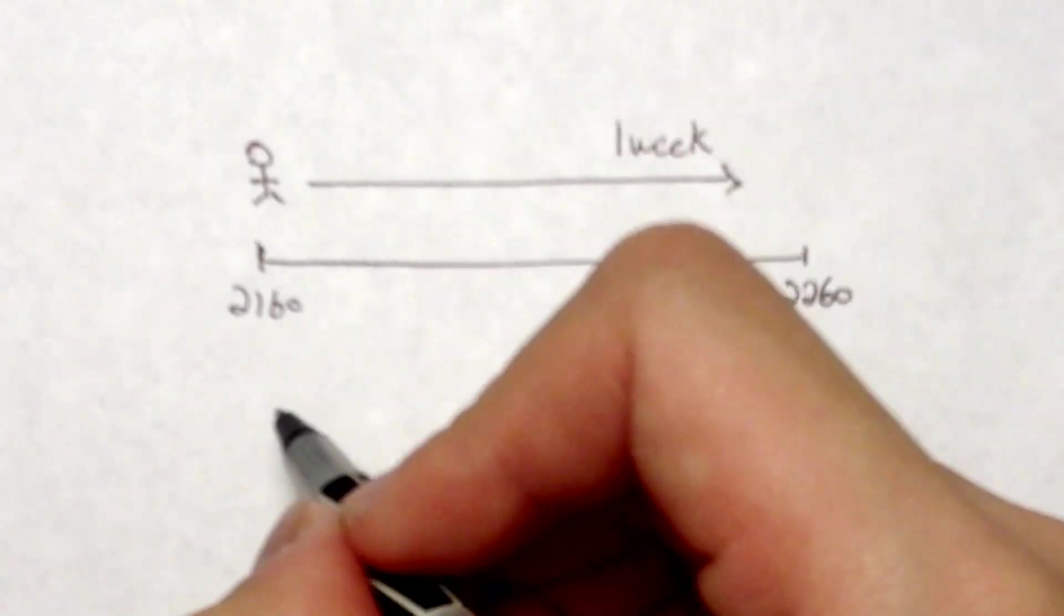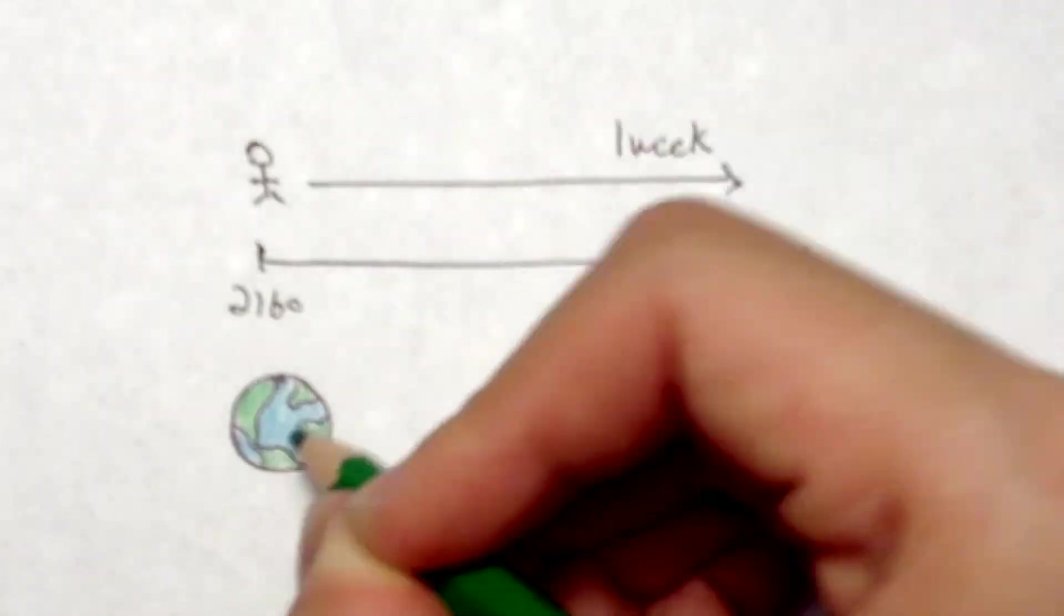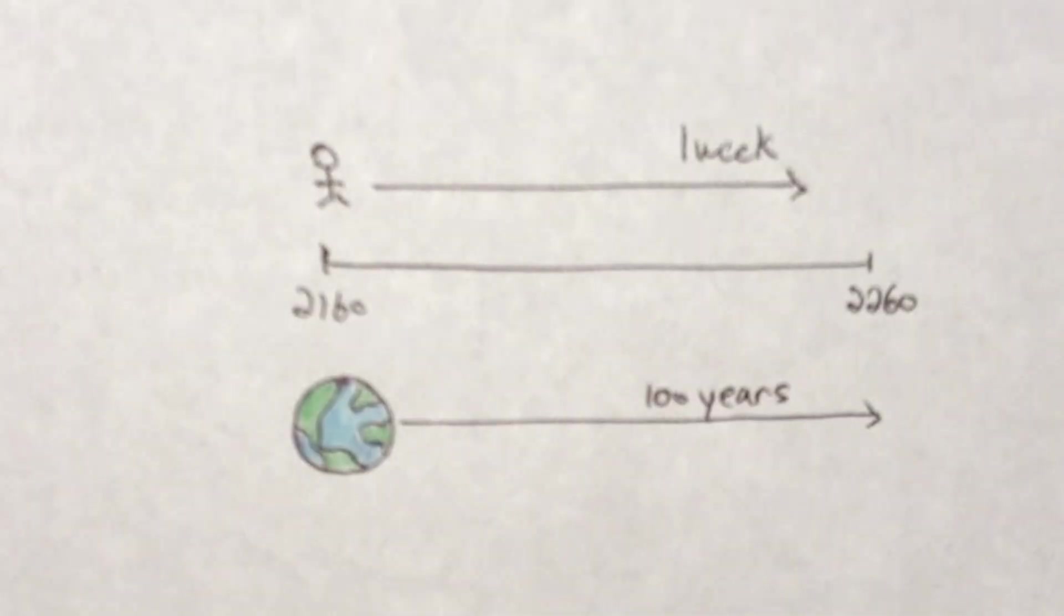For the passengers on board, one week would be equivalent to 100 years for the people on Earth, which means that after staying on a train for one week, passengers would have travelled 100 years into the future.